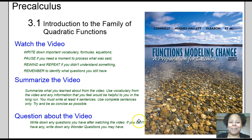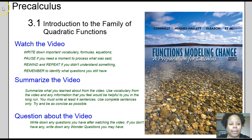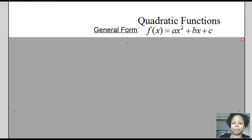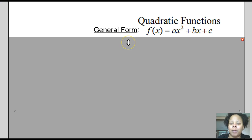All right, let's begin. We're going to be talking about Chapter 3.1, Introduction to the Family of Quadratic Functions. You guys probably have had enough experience with this, so this will probably be a review, but it's still good to make sure everyone is on the same page. A quadratic function's general formula is f(x) or y equals ax squared plus bx plus c, where a, b, and c are constants.